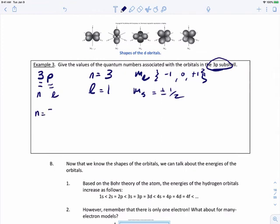So here we go. You're going to have one electron that could be N equals 3, L equals 1, M sub L equals negative 1, and M sub S equals plus 1 half. You could also have another one that says N equals 3, L equals 1, M sub L equals negative 1, and M sub S equals negative 1 half.